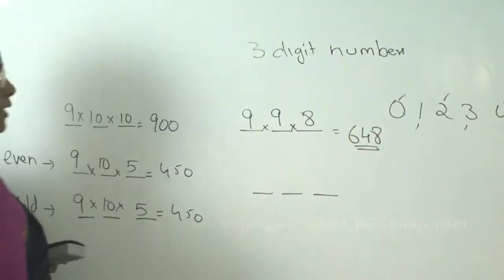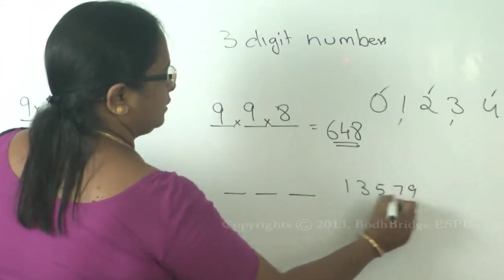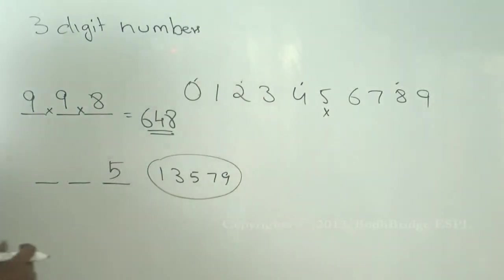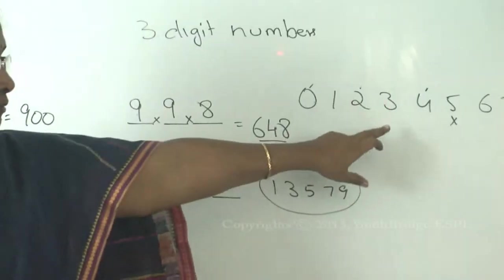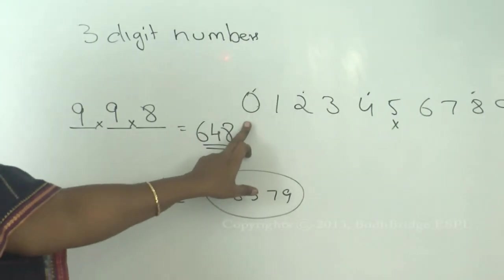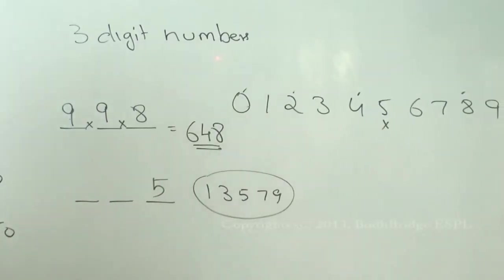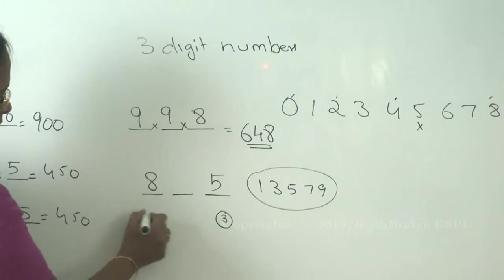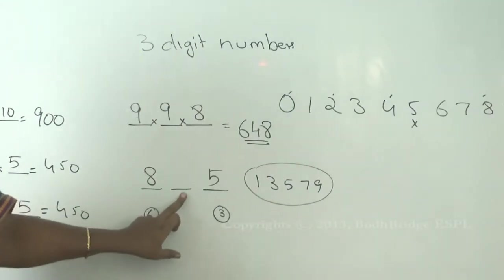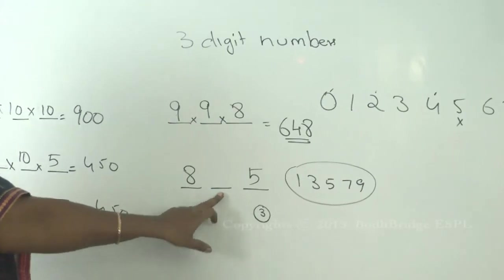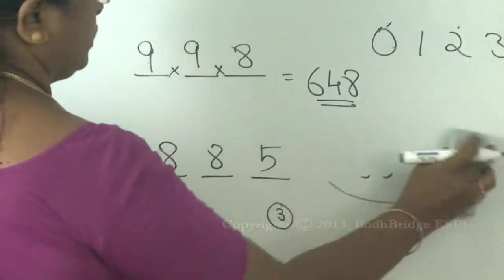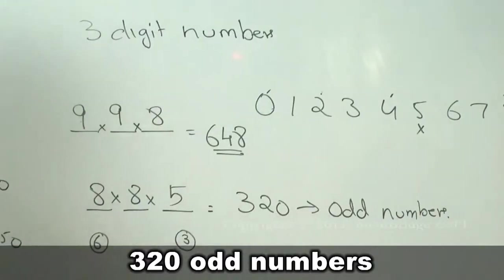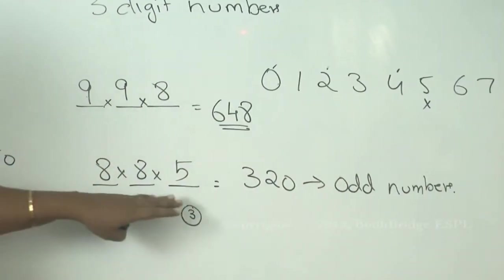Without repetition, finding odd numbers is easier. The odd digits are one, three, five, seven, nine — five choices for the last slot. Once one is selected, it cannot repeat in the first slot, and zero also cannot come in the first slot, so eight digits remain for the first slot. Suppose three is in the first and six in the last — two digits are gone, and all eight remaining digits can fill the middle slot. So the total odd numbers = eight into eight into five = 320.